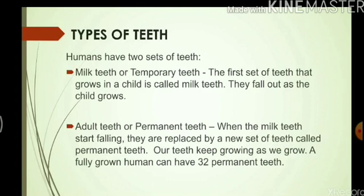Human beings have two sets of teeth. The first set of teeth that grows in a child is called milk teeth. They fall out as the child grows. So when your teeth first started growing, the teeth that grew are your milk teeth. Over the years you must have noticed that your teeth were falling out and new teeth grew in their place. When the milk teeth start falling, they are replaced by a new set of teeth called permanent teeth. Our teeth keep growing as we grow.